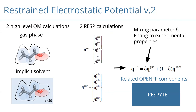We take a fraction delta from the gas phase charges and a fraction (1 - delta) of the implicit solvent calculation. All of that should be implemented within RESPite in the near future. The two main things I want to cover are: what kind of QM calculation we want to use, and the mixing parameter delta and how we can fit it.